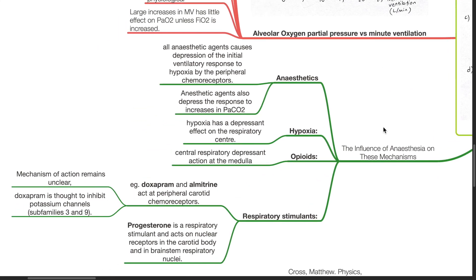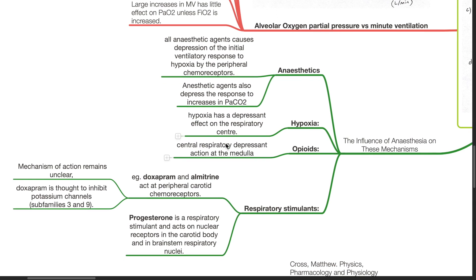The influence of anesthesia on these mechanisms. Anesthetic agents cause depression of the initial ventilatory response to hypoxia by the peripheral chemoreceptors. Anesthetic agents also depress the response to increases in PaCO2. Hypoxia has a depressant effect on the respiratory center. Opioids affect the central respiratory center by depressing it.